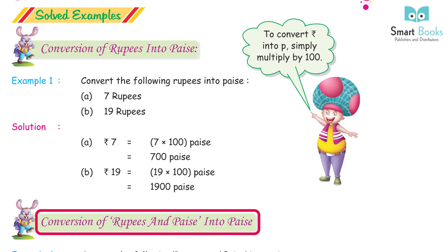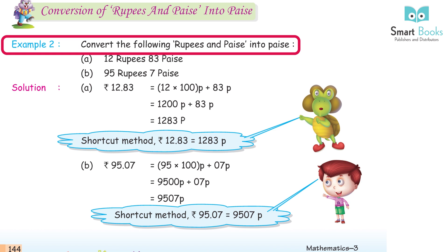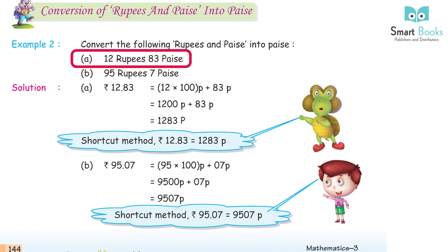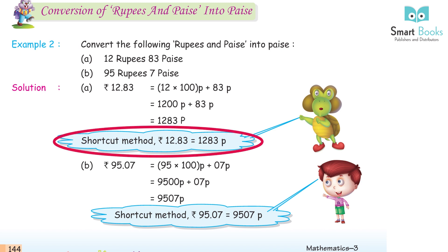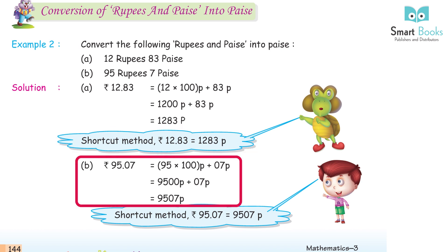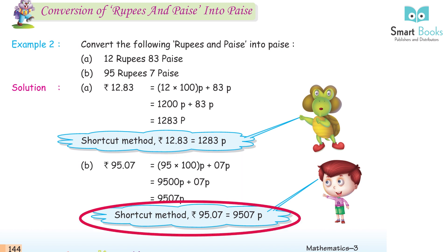Conversion of rupees and paise into paise. Example 2: a. Rs. 12.83 = 12 × 100 paise + 83 paise = 1200 + 83 = 1283 paise. Shortcut: Rs. 12.83 = 1283 paise. b. Rs. 95.07 = 95 × 100 paise + 07 paise = 9500 + 07 = 9507 paise. Shortcut: Rs. 95.07 = 9507 paise.